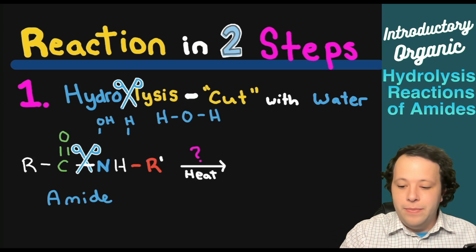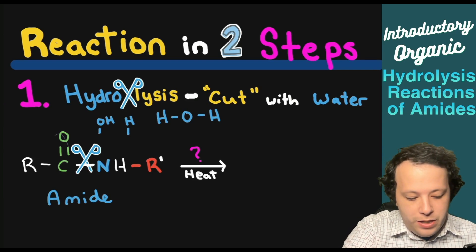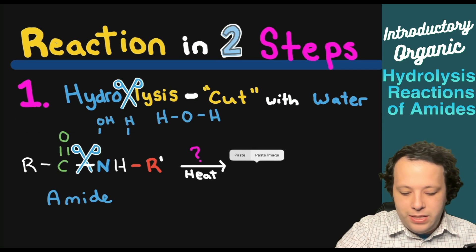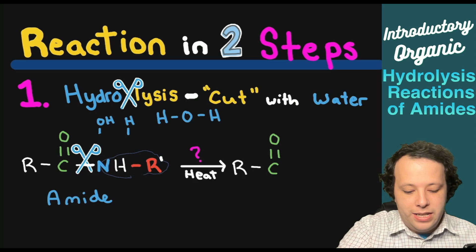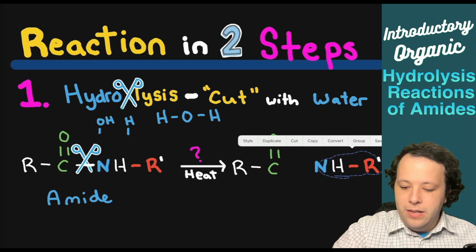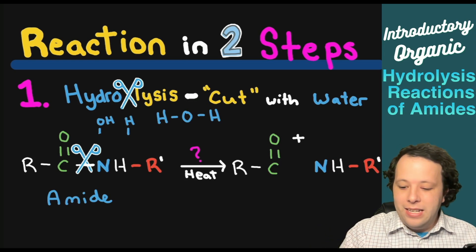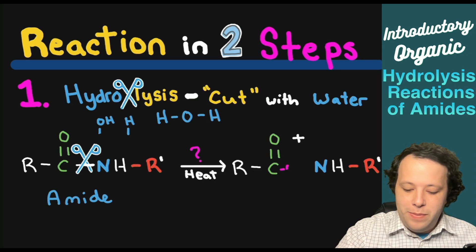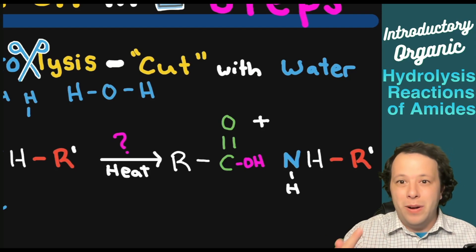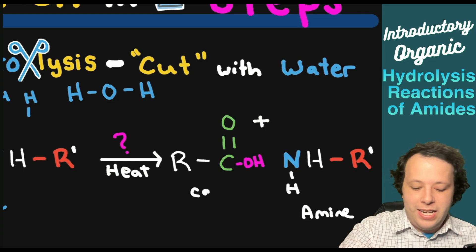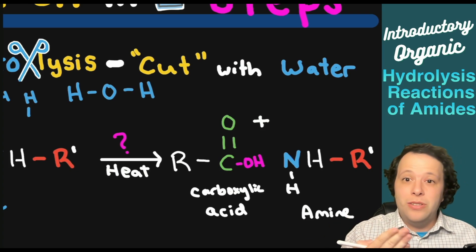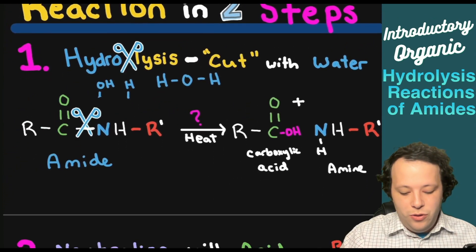So first let's just cut it — we're going to make our two individual pieces. If we cut the left from the right they are going to be separated, with a plus sign to show they're separate. We're adding the H component and OH. On the left side we're making a carboxylic acid and on the right side we're making an amine. Every time this goes through hydrolysis we're always going to be making these two components.